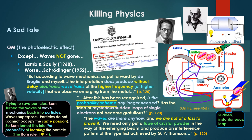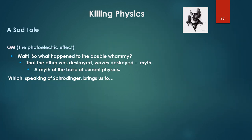But says Schrodinger, the waves are there anyhow. And we are not at a loss to prove it. We need only put a tube of crystal powder in the way of the emerging beam - electrons popping out there - and produce an interference pattern of the type achieved by G.P. Thomson. So wait. So what happened to that double whammy? Special relativity plus the photoelectric effect? Apparently the photoelectric wasn't much of a whammy. So that the ether was destroyed, that waves were destroyed, is a myth. A myth at the base of current physics. Which speaking of Schrodinger brings us to the measurement problem.